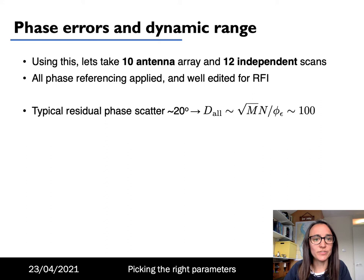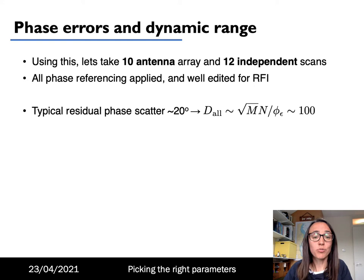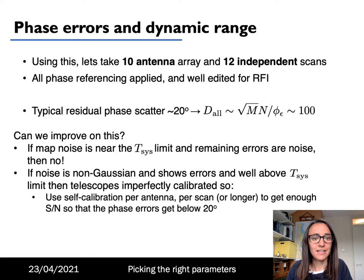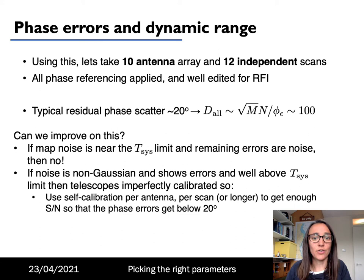For example, with a 10-antenna array and 12 independent scans, if all phase referencing has been applied and the data is well edited for RFI, a typical phase scatter of about 20 degrees gives a dynamic range of approximately root(m) × n over phi_e, which is of order 100. Can we do better? If the map noise is near the thermal noise limit and the remaining errors are noise, then no. However, if the noise is non-Gaussian and shows errors much larger than the thermal noise limit, that indicates the telescopes are imperfectly calibrated and we probably can do better. A good way to do this is via self-calibration, which you'll learn more about in the next lecture.